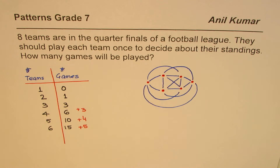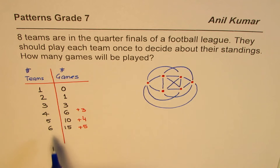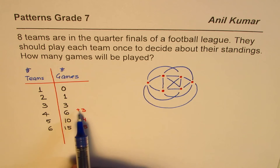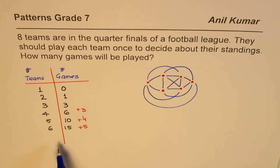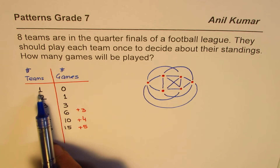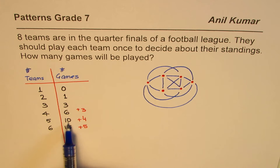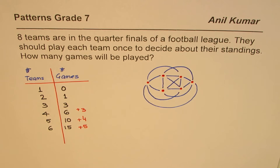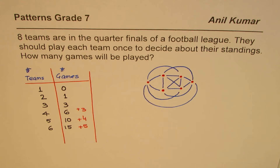Do you see a pattern? Every time we add a new team, we add one additional game more than before — that means the pattern is not linear. Looking at the outputs: one team gives zero, two gives one, three gives three, four gives six, five gives ten. There is a rule which links them.